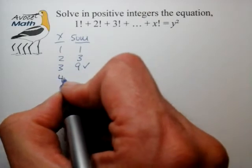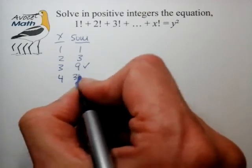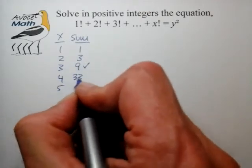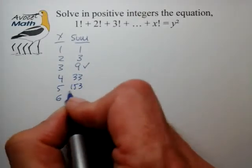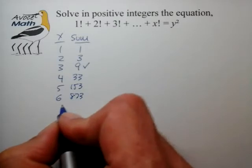Continuing we have 4, that's 24 onto 9, that's 33. 5 we have to add 120 onto 33, 153. 6 we have to add 720, so that's 873.